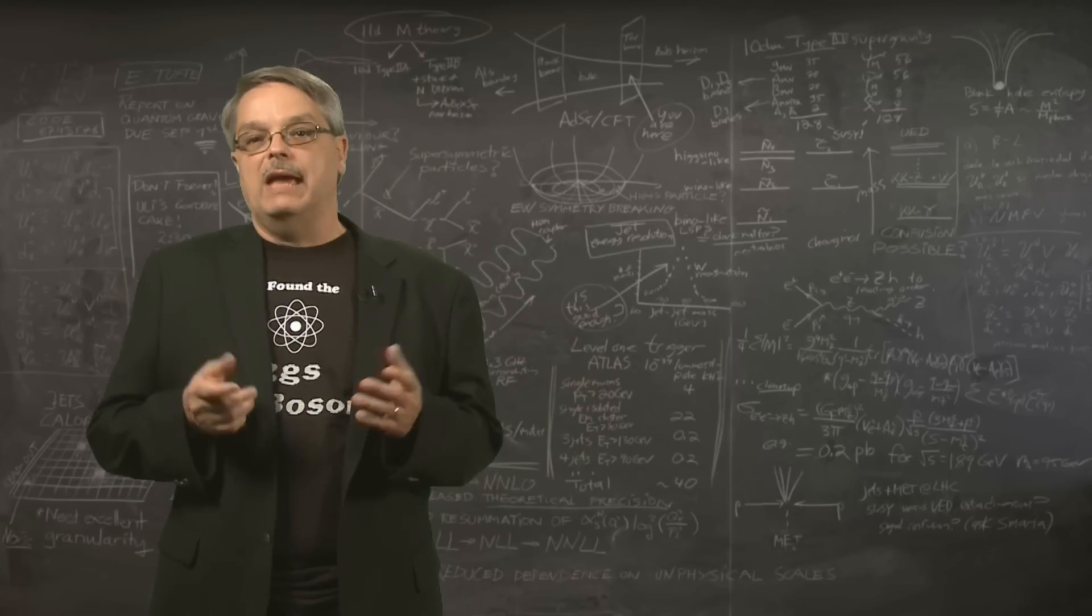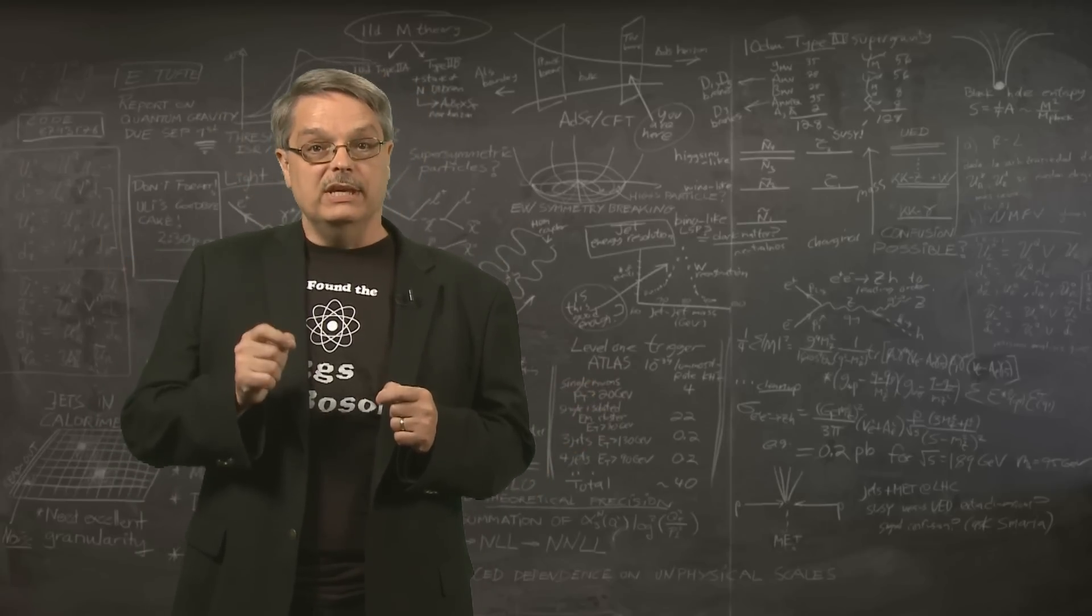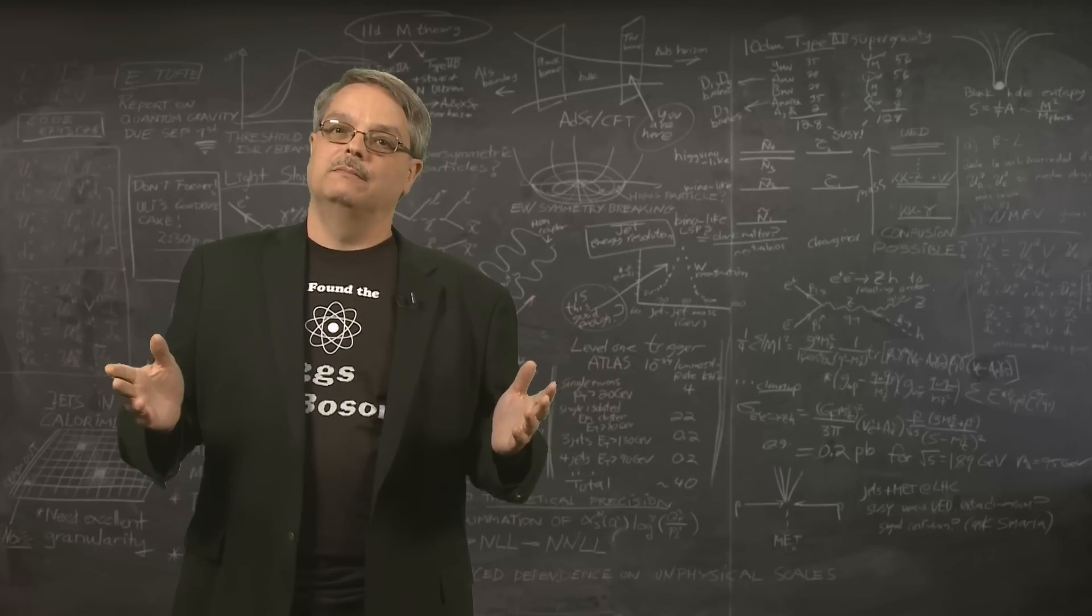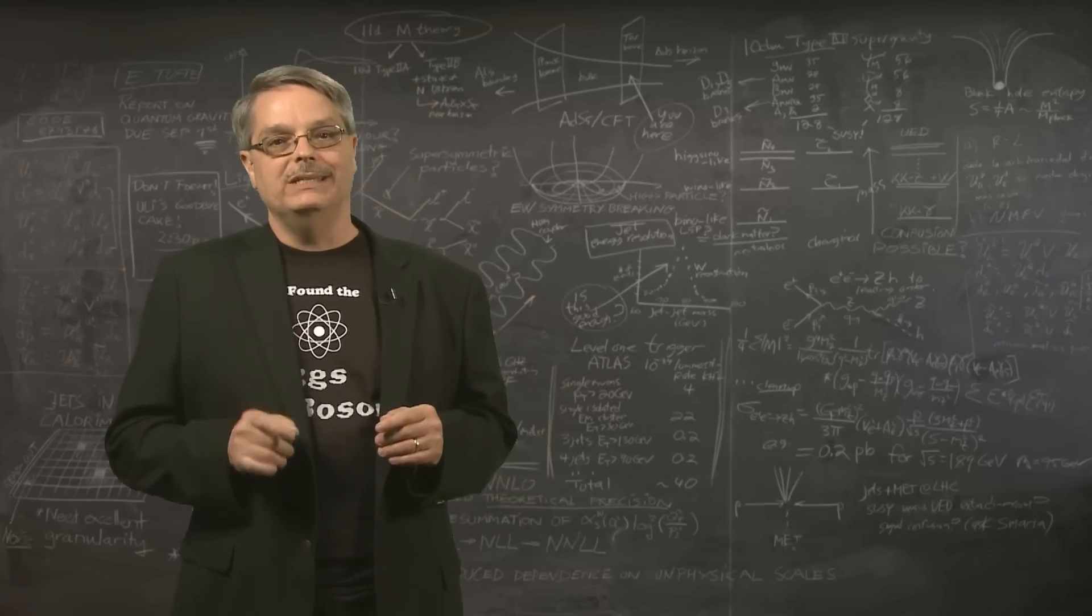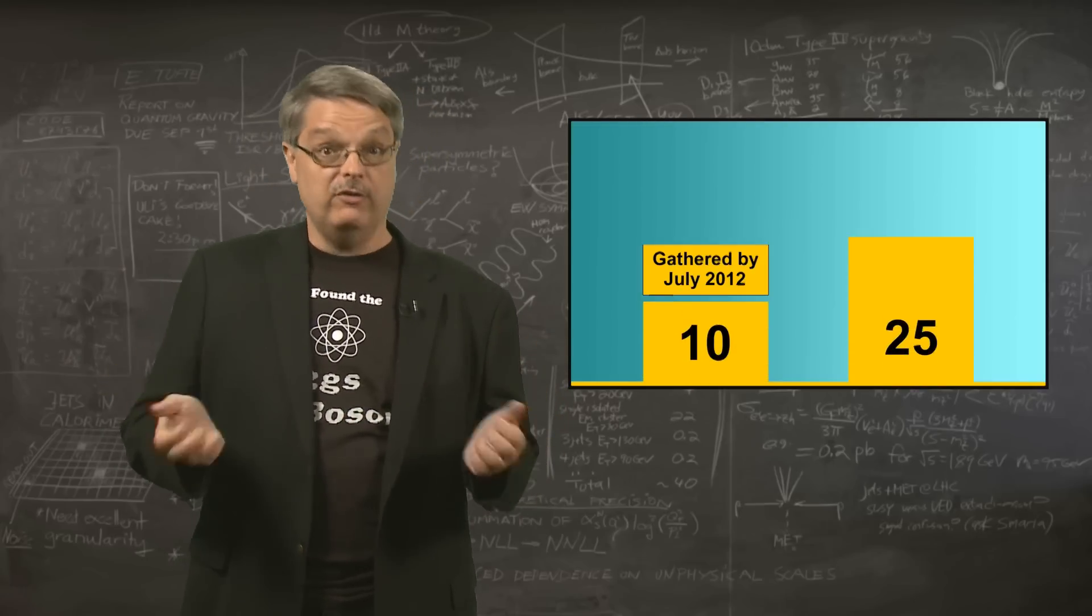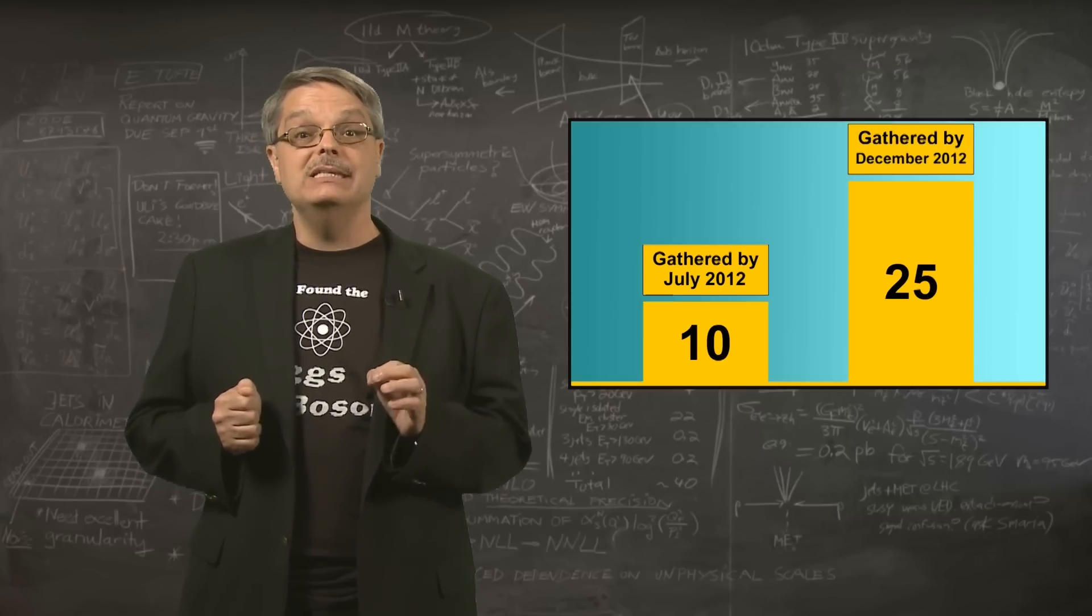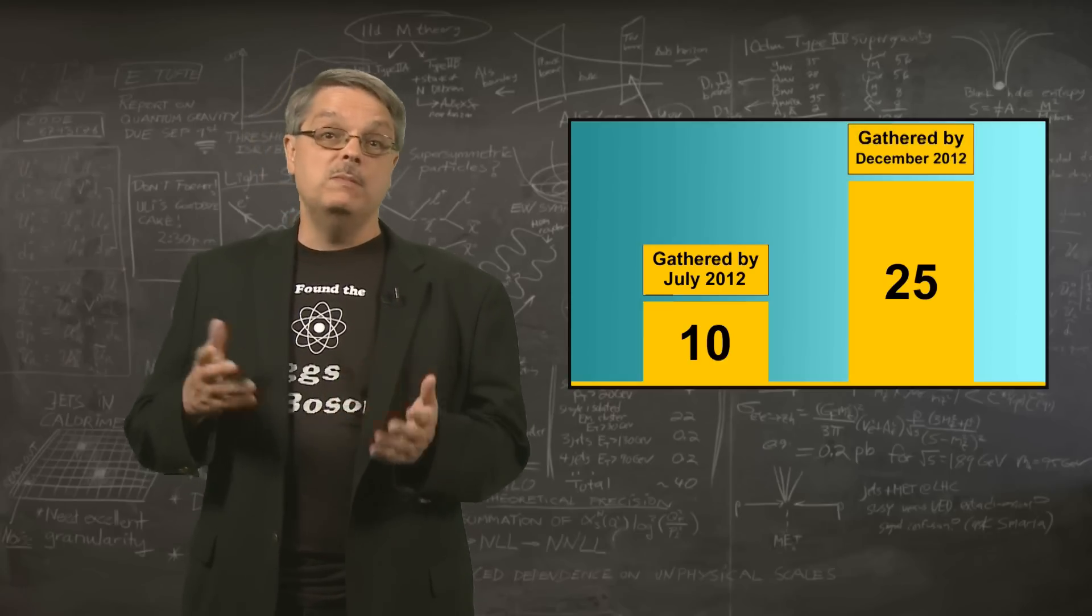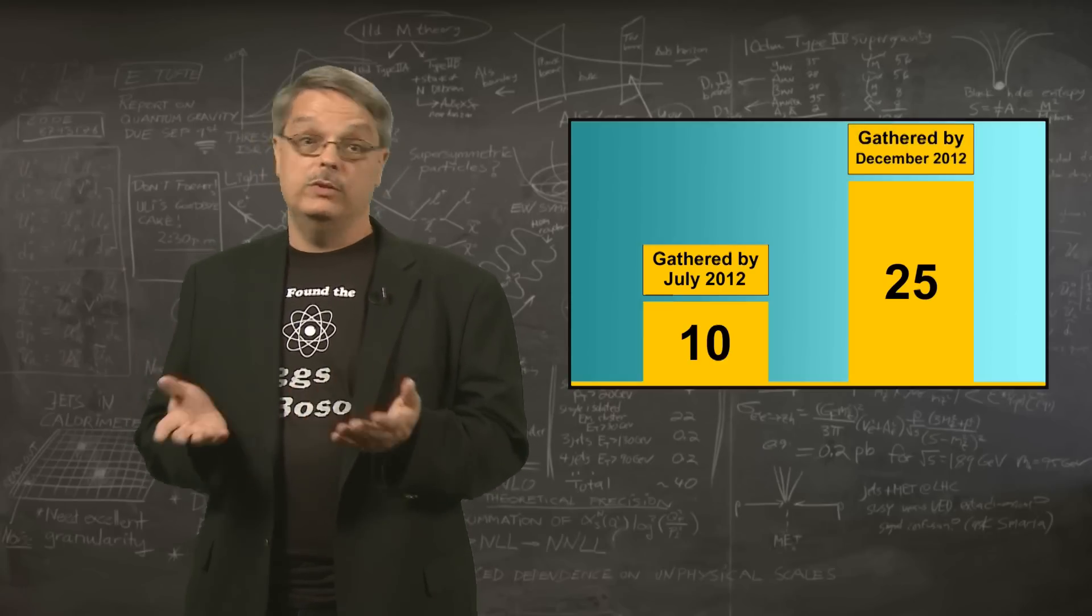So what has happened in the intervening months? Well, the first thing is that we collected a lot more data. Not sweating what the units mean, in July of 2012 we had about 10 units of data, and now we have 25. This increase in data means that we can re-measure the things studied last year with improved precision.